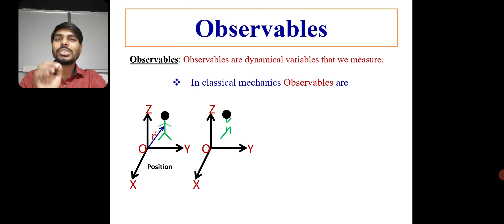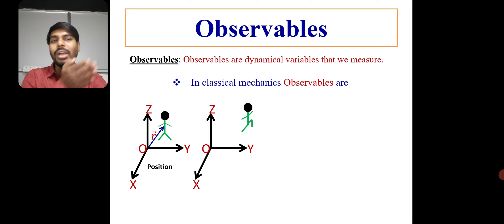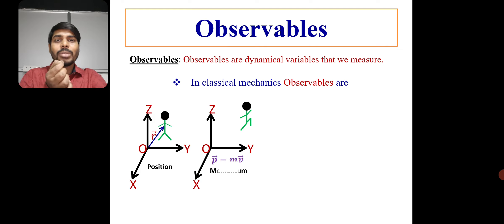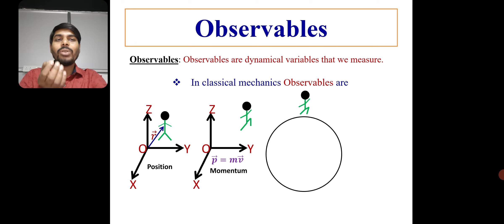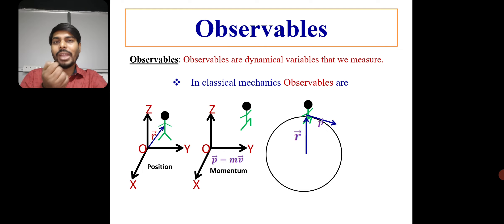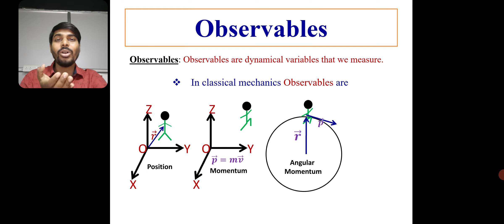Similarly, if the person is not standing at a point but is moving along a path, he is moving with some velocity v. So another observable we can measure is the momentum of the particle. Similarly, if this person is moving around a circular path — rotational motion — we can measure its angular momentum at any time, which is L equals R cross P. This is another observable we measure in classical mechanics.